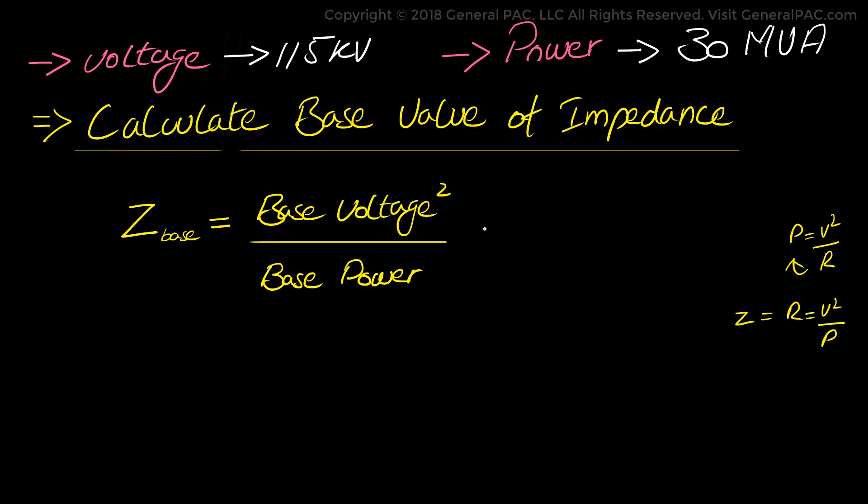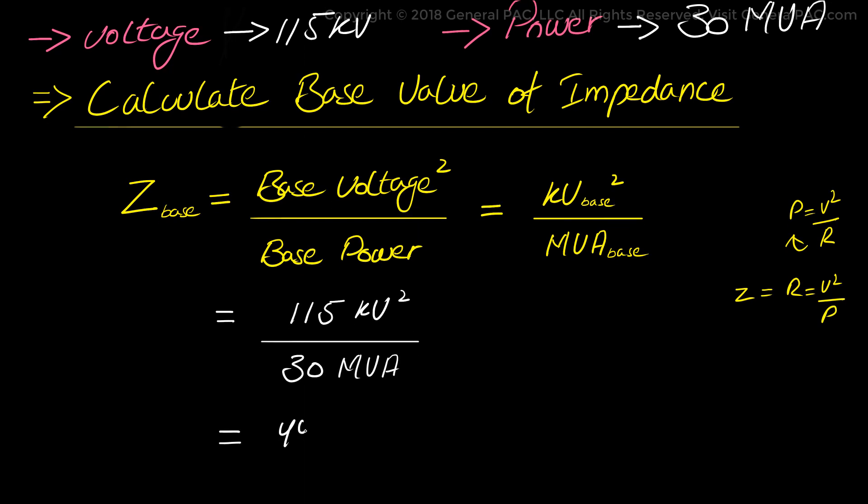Now that gives us the 115 kV squared divided by the 30 MVA. So Z base is equal to the KV base squared divided by MVA base which is equal to 115 kV squared divided by 30 MVA. Which equals 440.83 ohms. The 440 ohms now being the base value for the impedance.